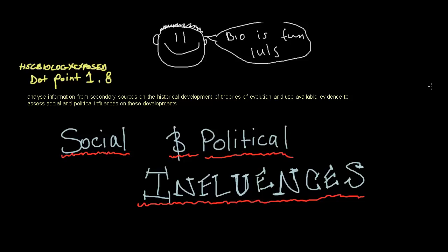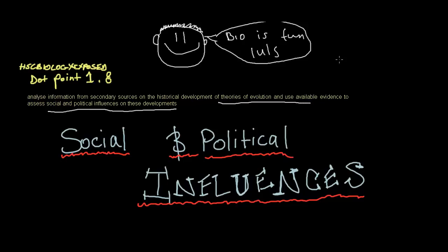Hey guys, today I'm going to be talking about dot point 1.8 as part of the Blueprint of Life syllabus: 'Analyse information from secondary sources on the historical development of theories of evolution and use available evidence to assess social and political influences on these developments.' So our main focus areas today are social and political influences on theories of evolution.